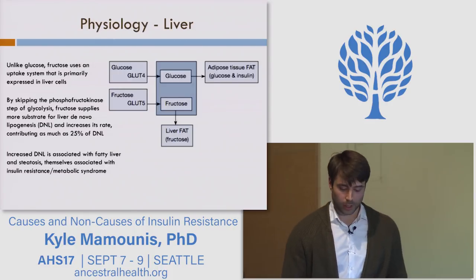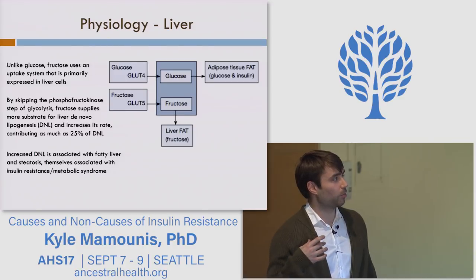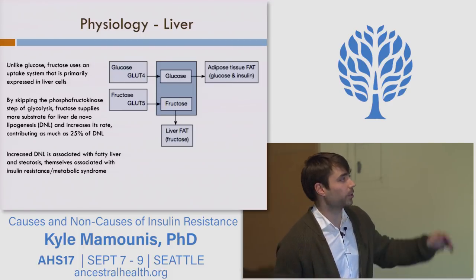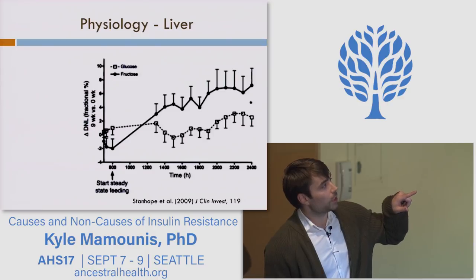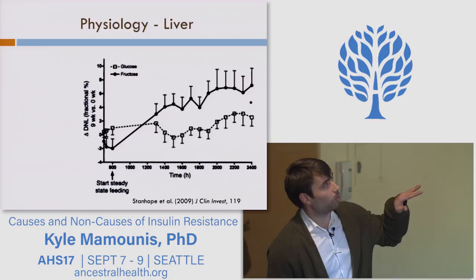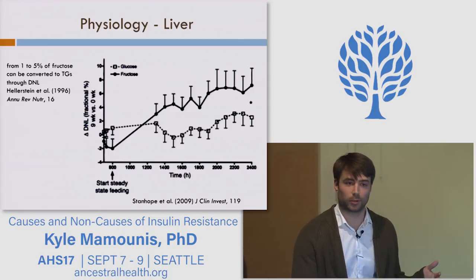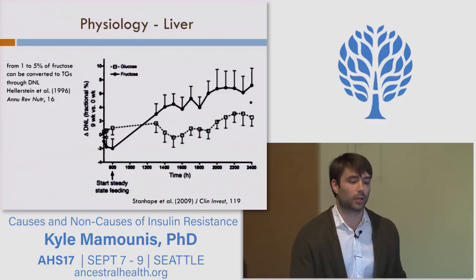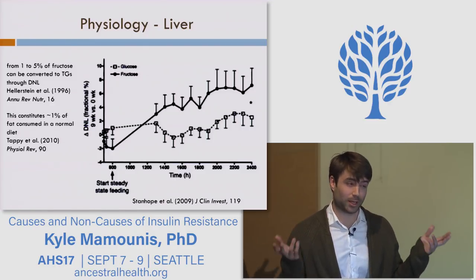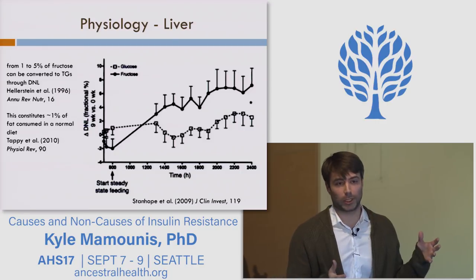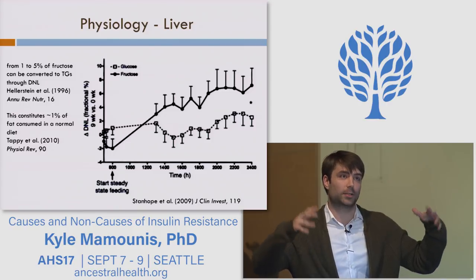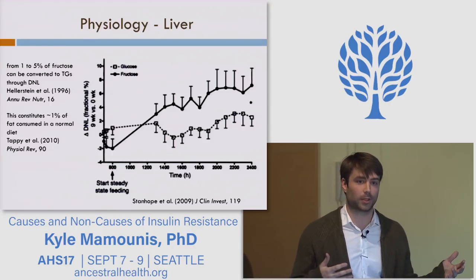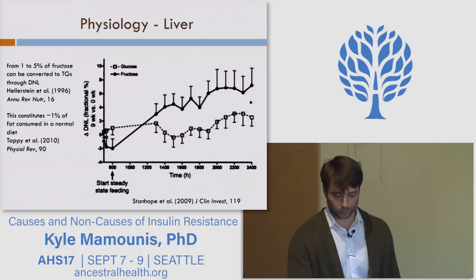At the liver, the de novo lipogenesis story — the 25% number looks big on a percentage basis, but really, at the most generous level, maybe 5% of fructose is actually converted into fatty acids that make their way into triglycerides. This ends up being roughly 1% calorically of the amount of fat you consume on a normal American diet. So at the highest possible de novo lipogenesis from fructose, you'd be contributing about 1% of your dietary fatty acids — not super significant.